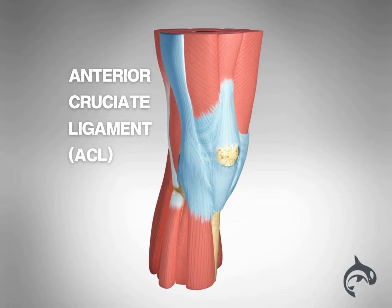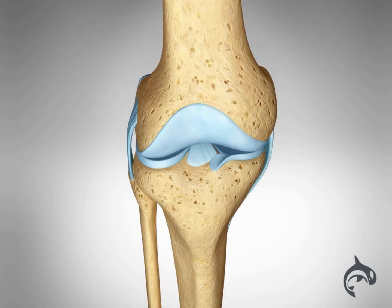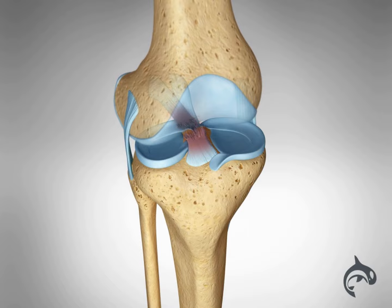The anterior cruciate ligament, or ACL, runs diagonally through the middle of the knee and controls rotation and forward movement of the tibia. Sudden stopping and twisting movement can cause the ACL to tear, making it one of the most common knee injuries, especially for athletes.